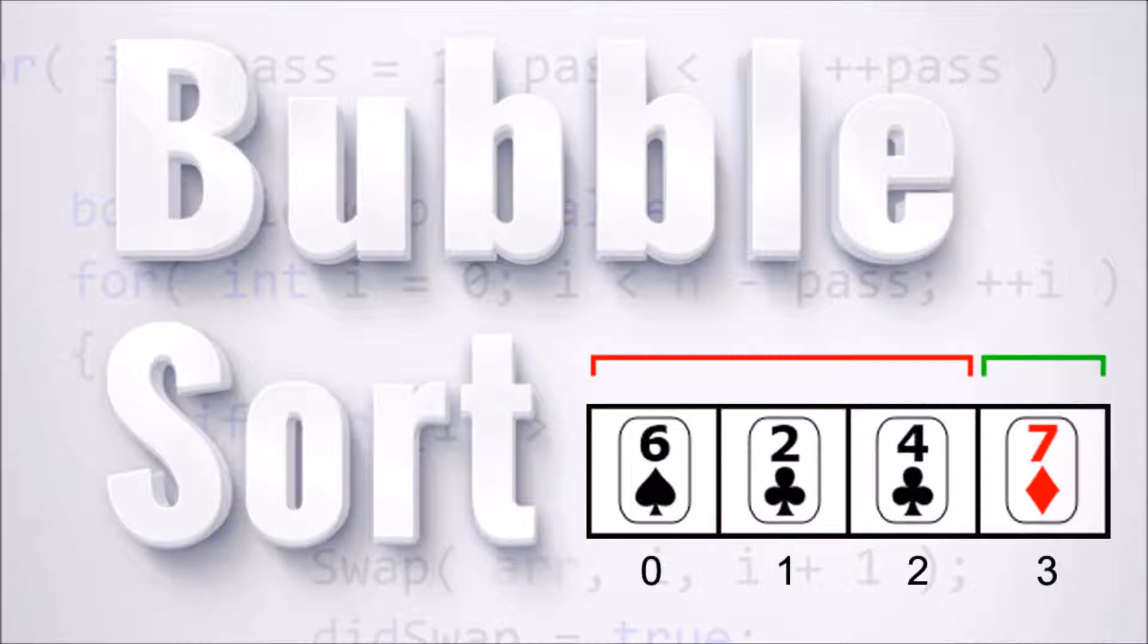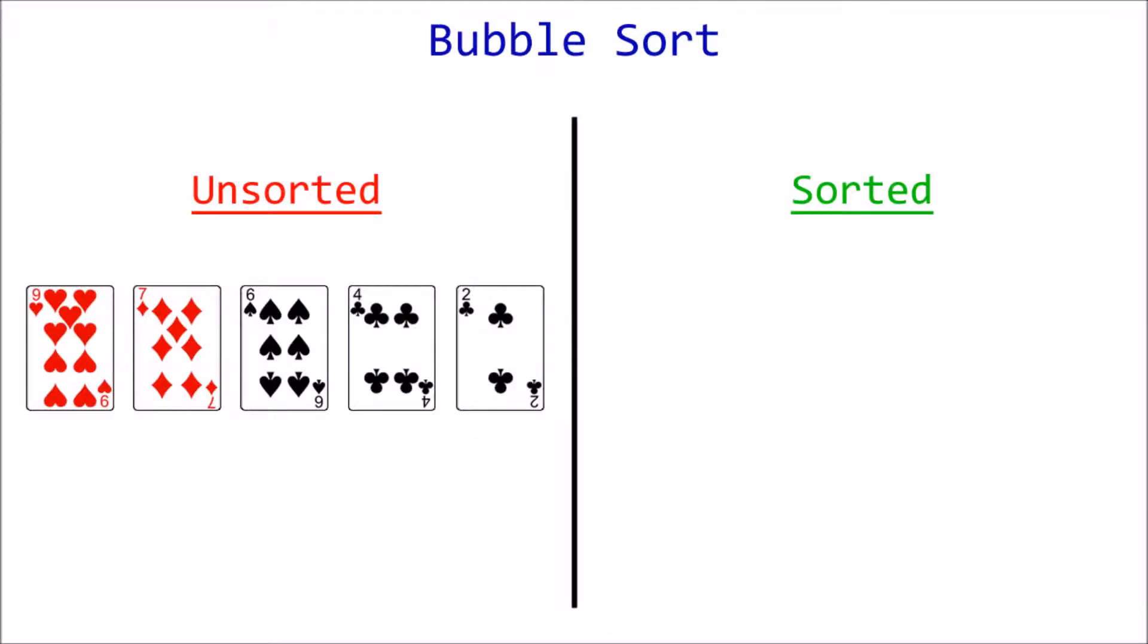Like selection sort, bubble sort involves dividing the original list into a sorted section and an unsorted section. Its name refers to how the elements bubble up to the sorted section, located at the end of the list.